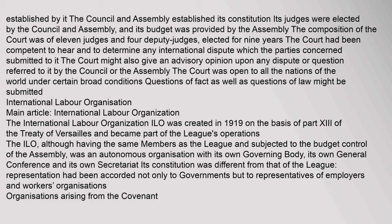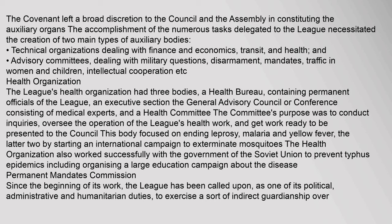The International Labour Organization (ILO) was created in 1919 on the basis of Part 13 of the Treaty of Versailles and became part of the League's operations. Although having the same members as the League and subjected to the budget control of the Assembly, the ILO was an autonomous organization with its own governing body, its own general conference, and its own secretariat. Its constitution was different from that of the League — representation had been accorded not only to governments but to representatives of employers' and workers' organizations. The Covenant left broad discretion to the Council and the Assembly in constituting auxiliary organs, which included technical organizations (finance, economics, transit, health) and advisory committees (military questions, disarmament, mandates, traffic in women and children, intellectual cooperation).